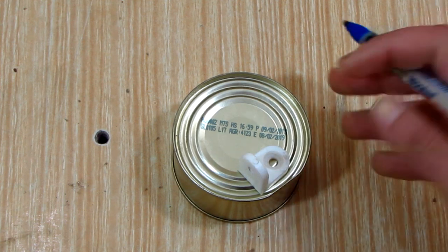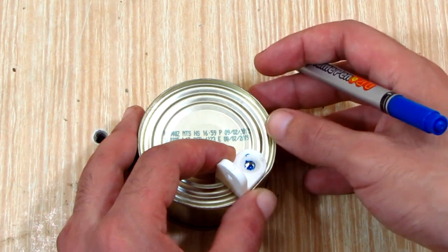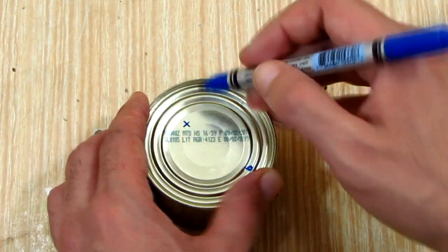I positioned the bracket where I want it, then I marked the hole for the rivet. I then estimated the place for the female jack and marked it.